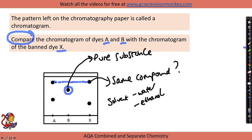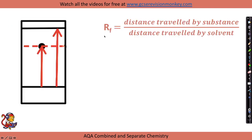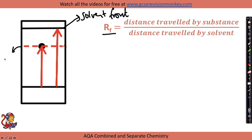In the exam you might be asked to calculate an RF value. You do this by calculating the distance travelled by a substance divided by the distance travelled by the solvent. The top line represents the solvent front — where the solvent reached before we removed the paper. The important thing when calculating RF values is that you must measure from the centre of the dot on your chromatography paper — not the top, not the bottom, but right in the middle.